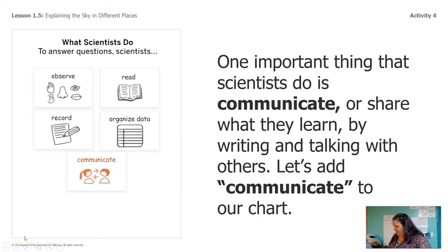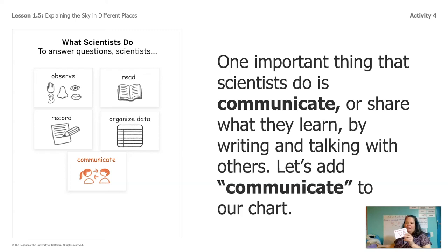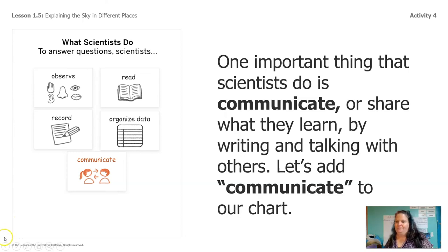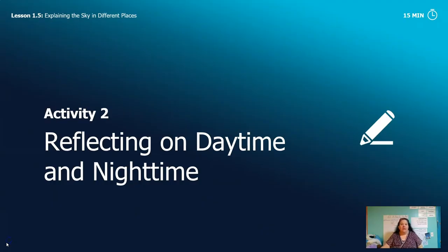What we did today was communicate — we communicated to our partner when we were talking, and we communicated to Sai when we wrote out why what he saw was different from his grandma. Let's add 'communicate' to our chart. We have done so many things: observe, read, record, organize, and now communicate. I have one more thing I want you to do today when this video is over, and that's reflecting on daytime and nighttime.